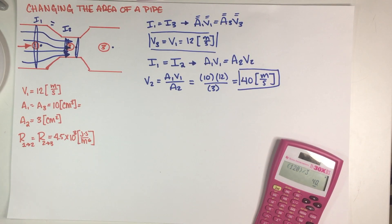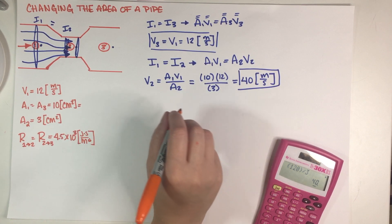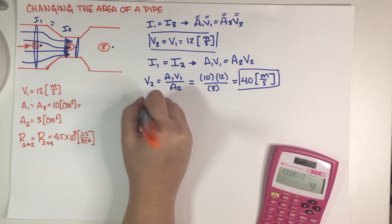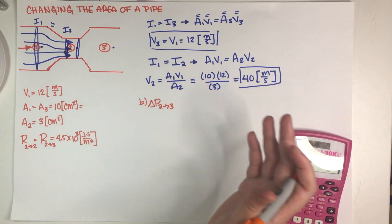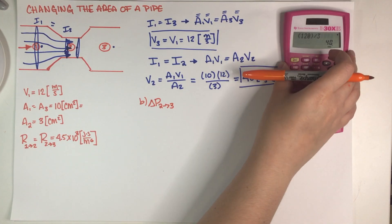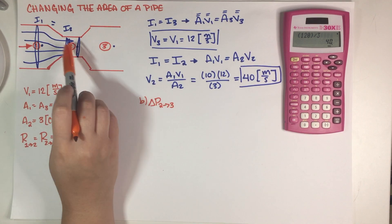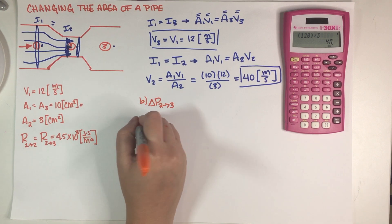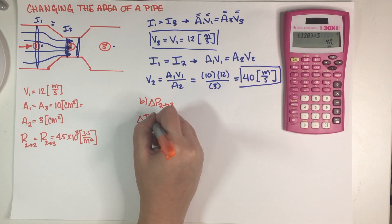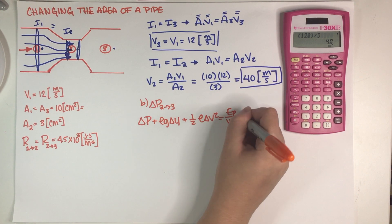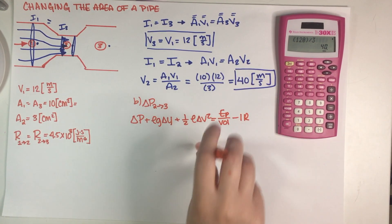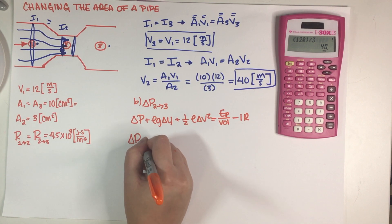All right, so moving on to the next part of the problem over here, what is the pressure difference between points 2 and 3. So at this point we really have to use our Bernoulli equation so let's just go ahead and do that. This problem is telling me to use my Bernoulli equation from point 2 to point 3, so let's just go ahead and crunch those numbers.